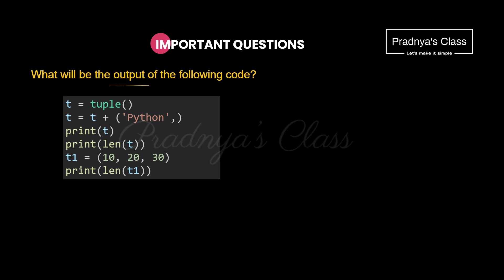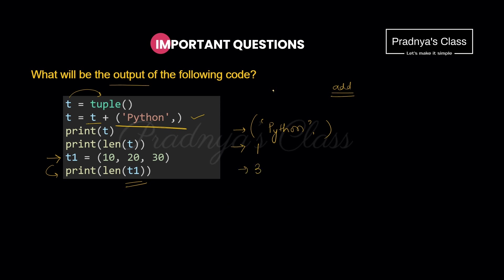Next question: find the output of the following code. An empty tuple is created. Then we concatenate it with a single element tuple containing the string 'python'. This is valid — we can concatenate tuples to effectively add an element. Printing the tuple gives ('python',). The length of this tuple is 1. Then a new tuple with three elements is created, and its length is 3.